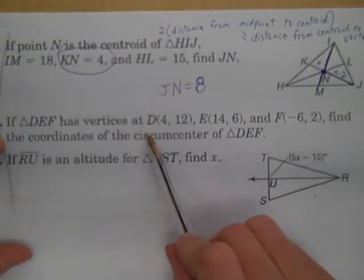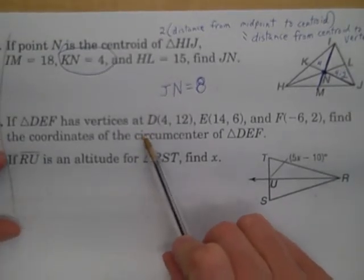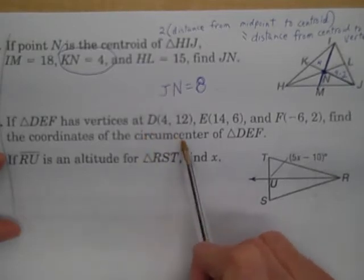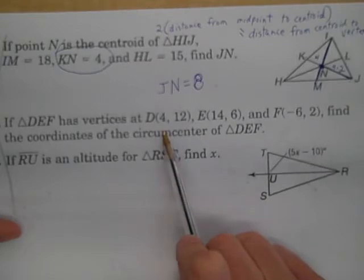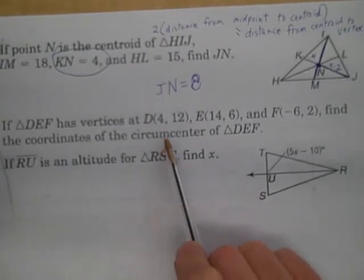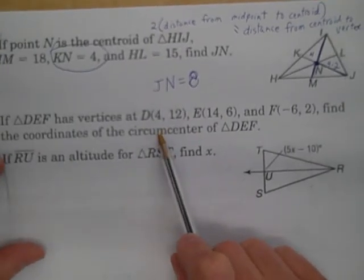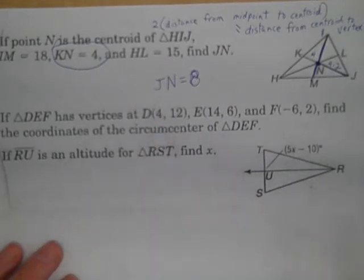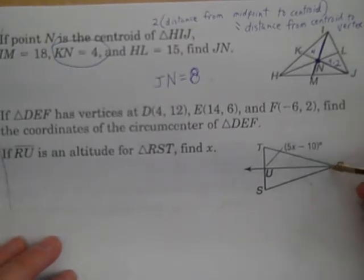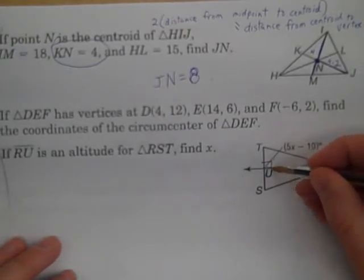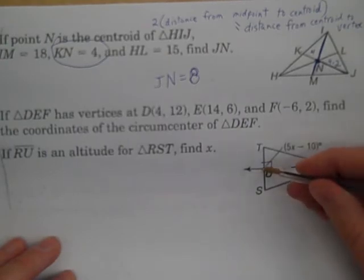Number 4, I'm going to skip for now. I did do a video where we found the circumcenter, and you've taken notes on that. We'll skip that for now. If we need to come back to it, we'll talk about that in class. Number 5, if RU is an altitude, RU is an altitude. That means an altitude goes from vertex to perpendicular.